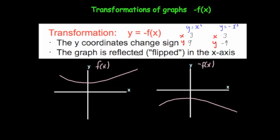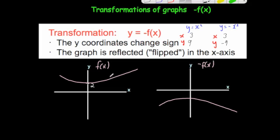Here's an example: if you had f of x with all positive heights, perhaps crossing the y-axis at 2, then if you do minus f of x all the heights change sign. So a height of 2 would now be minus 2, a height of 2.5 would now be minus 2.5, and so on. The graph would be reflected in the x-axis.